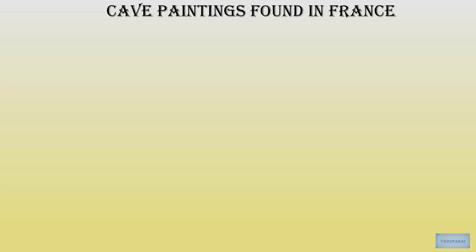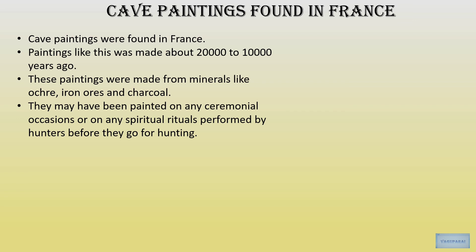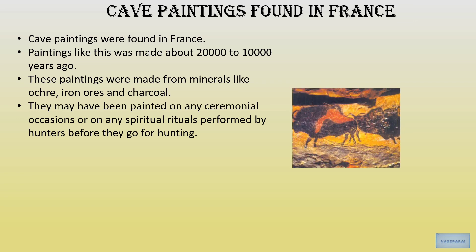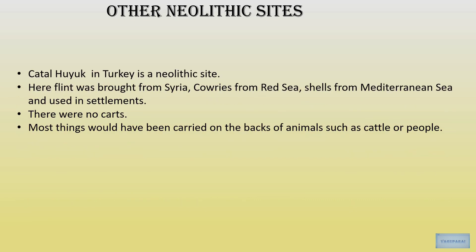Cave paintings were also found all over the world. In France, paintings dated from 20,000 to 10,000 years ago were made from minerals like ochre, iron ores and charcoal. These may have been painted on ceremonial occasions or spiritual rituals performed by hunters before they went for hunting. Other Neolithic sites include Çatalhöyük in Turkey, where flint was brought from Syria, cowries from the Red Sea and shells from the Mediterranean Sea. It is thought these materials were carried on the backs of animals such as cattle, or by people.